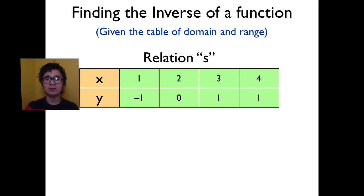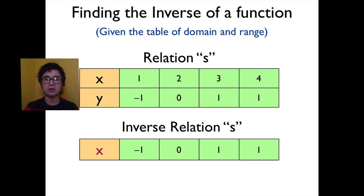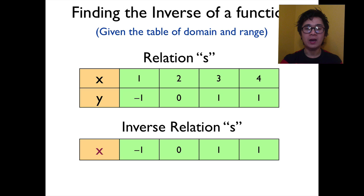Now if we need to find the inverse of this relation that we call s, inverse relation of s is simply interchanging the value of your domain and the value of your range. So the value of x will now have negative 1, 0, 1, and 1. And the new value of y will be 1, 2, 3, and 4.